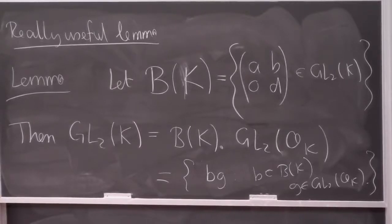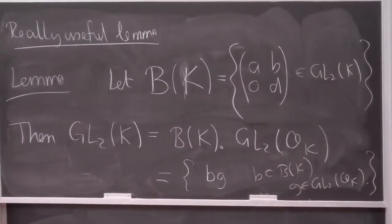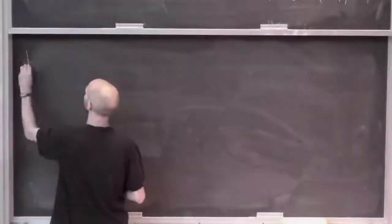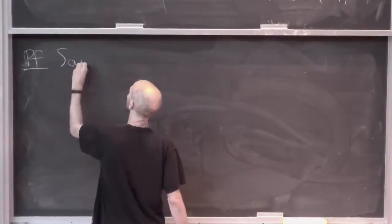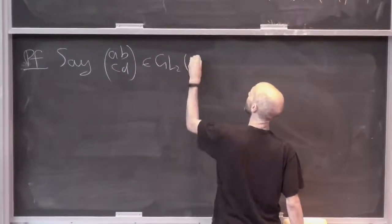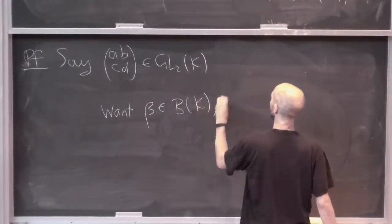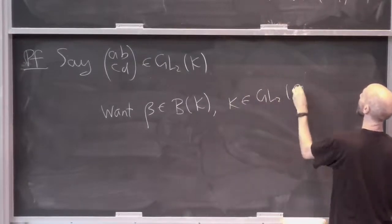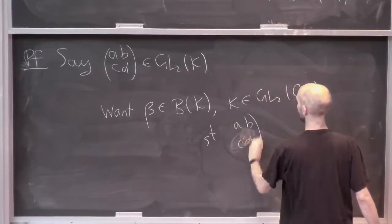Let me prove the lemma. It's true for GL_N, and I'm specializing to GL₂. So here's the proof. Let A, B, C, D be in GL₂(K). We want to find β in B(K) and κ in GL₂(O_K) such that the matrix (A, B; C, D) equals β times κ. I'll call this γ. What I'm going to do is slightly modify γ by either multiplying it on the left by an element of B(K) or on the right by an element of GL₂(O_K), and if I eventually get the identity, we're done.